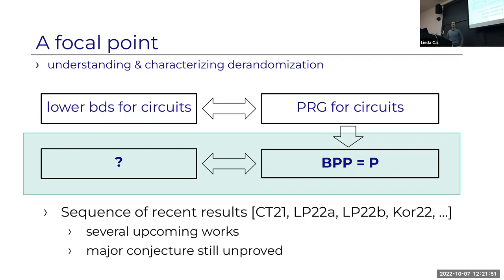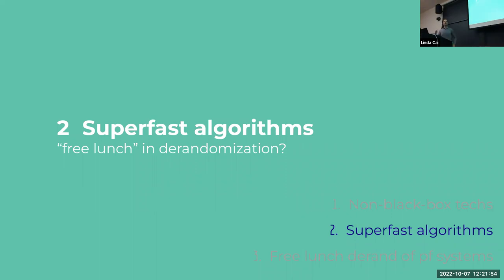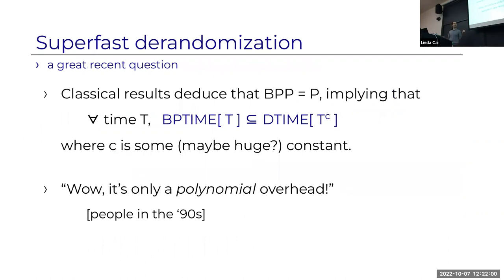The question of characterizing BPP equals P is the focal point here—there are partial results and still a lot of open work. The other direction is super-fast algorithms and free-lunch theorems. Going back to classical results: they say BPP equals P, which implies that for any time bound T, you can simulate probabilistic time T in deterministic time T-to-the-C for some constant C. We're not necessarily controlling this constant—it comes from the hypothesis and overheads in the construction. So maybe T goes to T-to-the-million, but in the 90s that was fine: polynomial time.